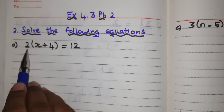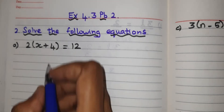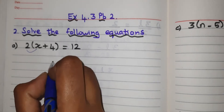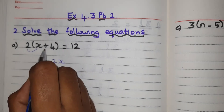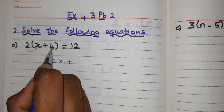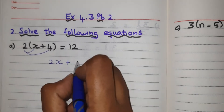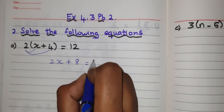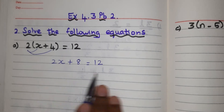It is given 2 into (x plus 4). I want to multiply the sum with 2. First, multiply 2 with x — 2 into x is 2x. Next, what is the symbol here? Plus. Next, multiply 2 into 4 — 2 into 4 is 8. So we have 2x plus 8 equal to 12. Now I have removed the bracket and formed the equation.